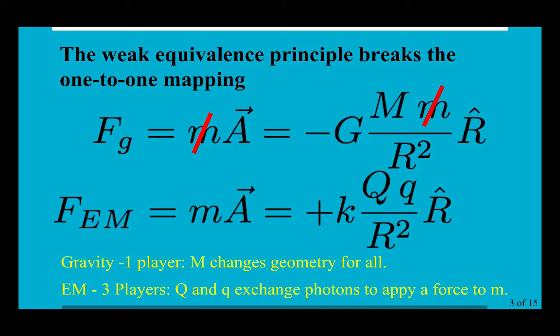Whereas EM stays with three players in the game. You've got these two charges and they trade photons back and forth, and exactly how they do that trade determines whether the mass is going to be attracted to this situation or is going to be repelled. So now we have two very different force laws.